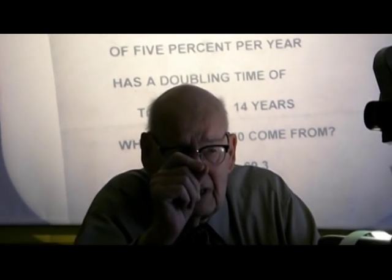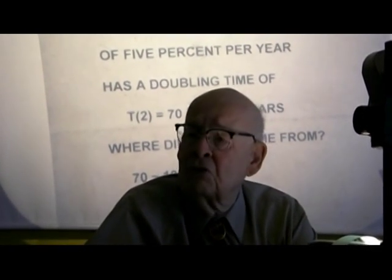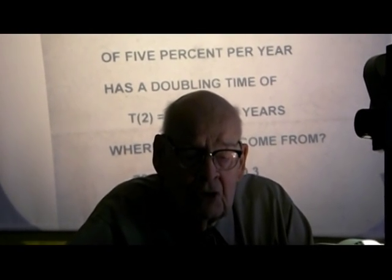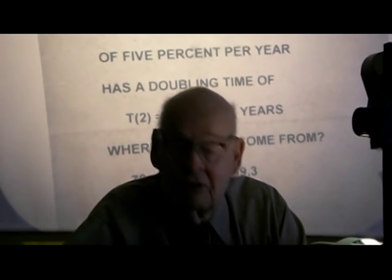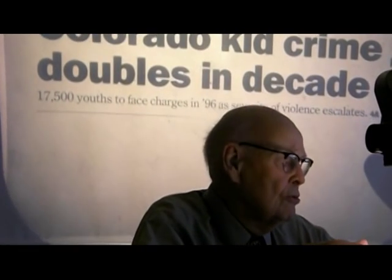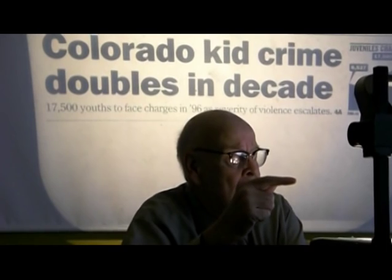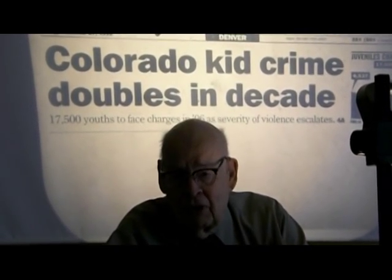I wish we could get every person to make this mental calculation every time we see a percent growth rate of anything in a news story. For example, if you saw a story that said things had been growing 7% per year for several recent years, you wouldn't bat an eyelash. But when you see a headline that says crime has doubled in a decade, you say, my heavens, what's happening? 7% growth per year — divide the 7 into 70, the doubling time is 10 years. If you're going to write a headline to get people's attention, you'd never write 'crime growing 7% per year' because nobody would know what it means.